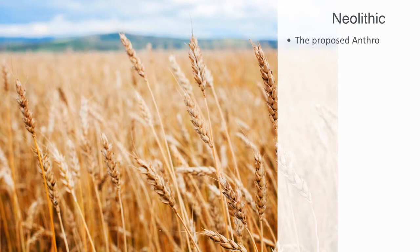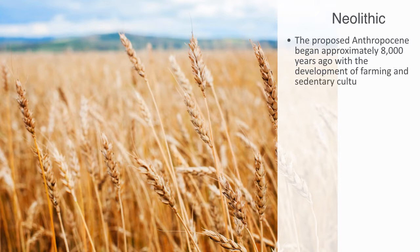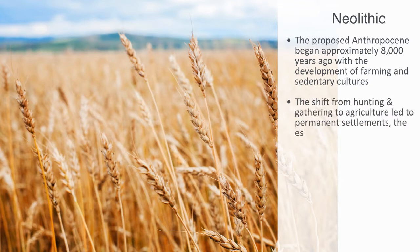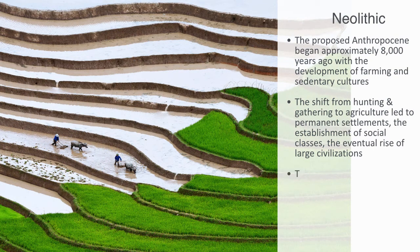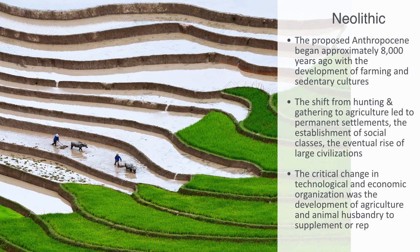William Ruderman, among others, has argued that the proposed Anthropocene began approximately 8,000 years ago with the development of farming and sedentary cultures during the Neolithic Revolution. The Neolithic Revolution was a fundamental change in the way people lived — the shift from hunting and gathering to agriculture led to permanent settlements, the establishment of social classes, and the eventual rise of urban living and large civilizations. The critical change was the development of agriculture and animal husbandry, which was followed by a wave of extinctions of large mammals and land birds driven by both direct hunting and land-use change for agriculture.